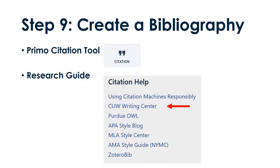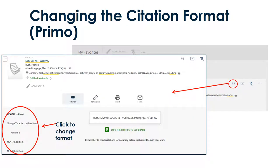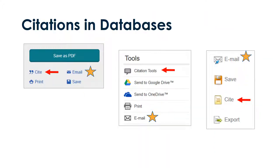When you get to Step 9, Creating the Bibliography, Primo has some great built-in citation tools, and our research guides have links to some resources which can help. Be sure to consult your instructor if you're not sure what citation style to use. In Primo, click on the quote marks anywhere you see them and select your citation style. Most databases also have citation tools and include citations when you email items. Always check machine-generated citations for accuracy.